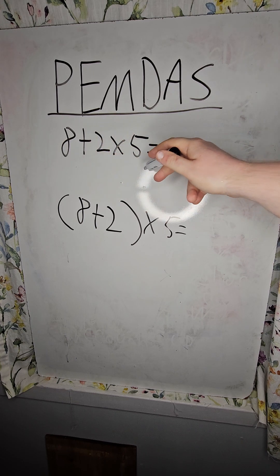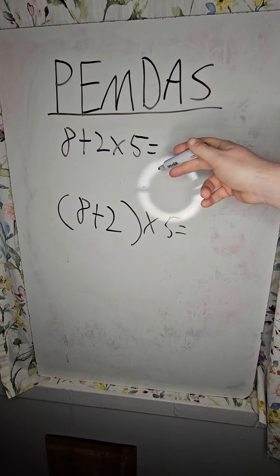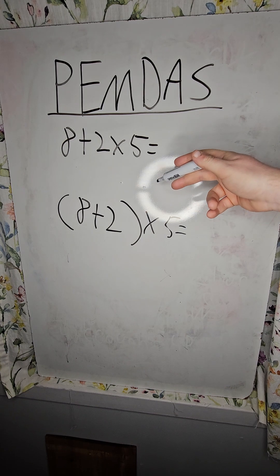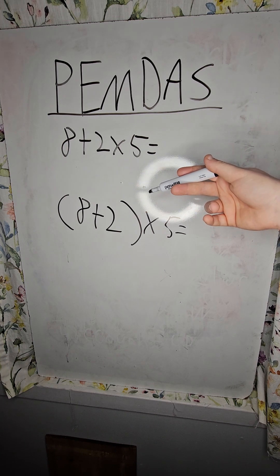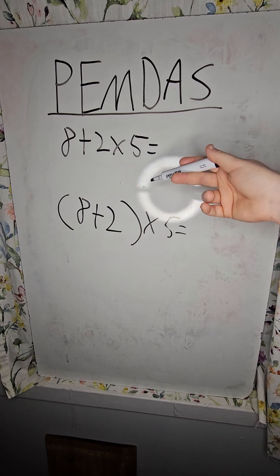I saw a question like this on TikTok recently, and people were getting it wrong because they didn't understand the order of operations. The order of operations is like the grammar of math. It tells us how an equation is supposed to be figured out.